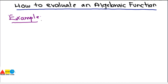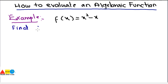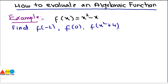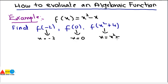We will start with an example where we are given the algebraic function f(x) = x² - x, and we have to find f(-2), f(0), and f(x² + 4). This means we have to evaluate the given function at x = -2, x = 0, and x = x² + 4 — putting these three different values into the function.